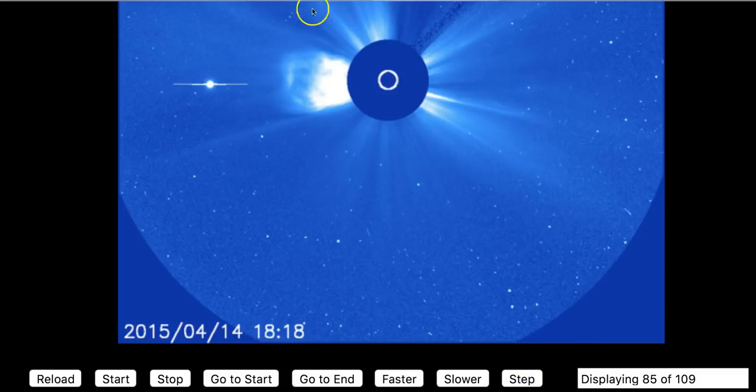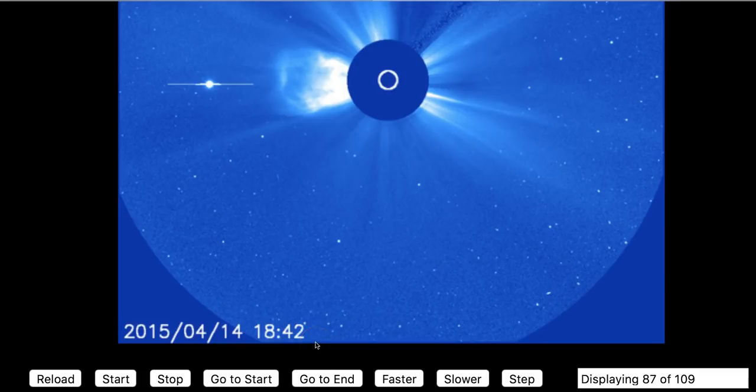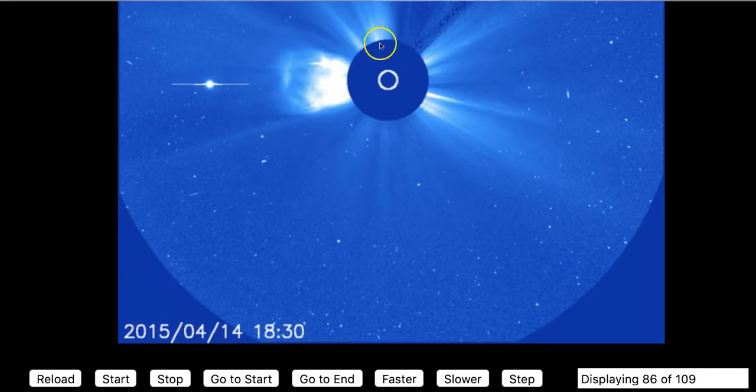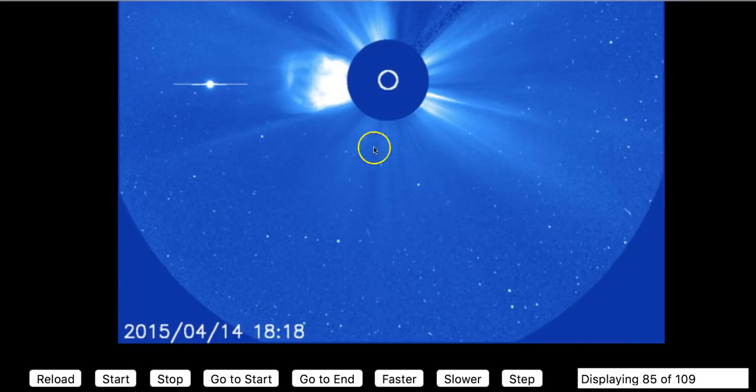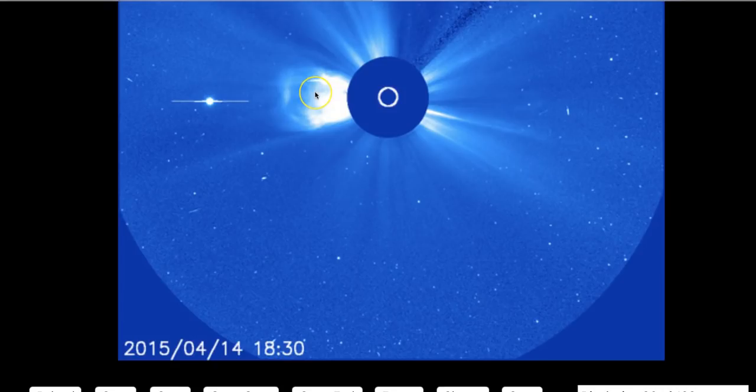You go back another 12 minutes and it wasn't there. So then we go back forward another 12 minutes to 18:30. It's there. Step it forward again. One frame. 12 minutes. It's gone. So there was a 24-minute time frame that it could have been there. But we just didn't see it. Because we don't have access to that imagery. So could something have appeared there rather quickly? I suppose so.